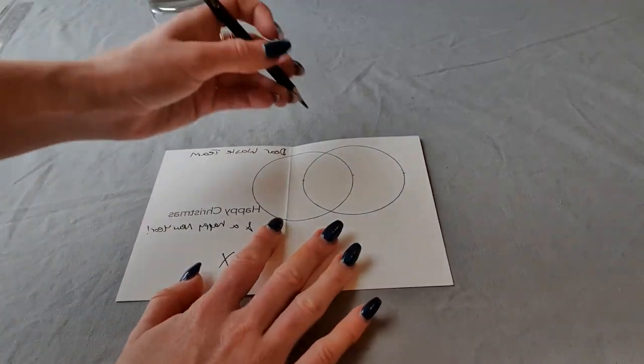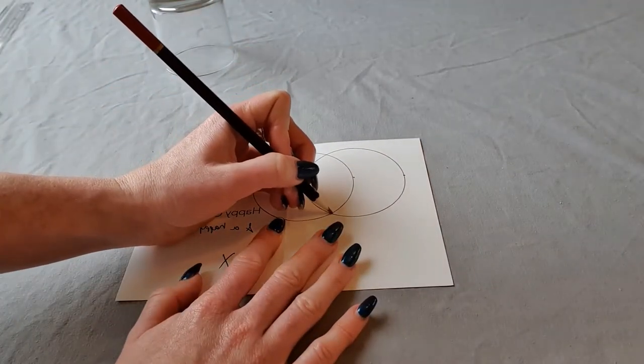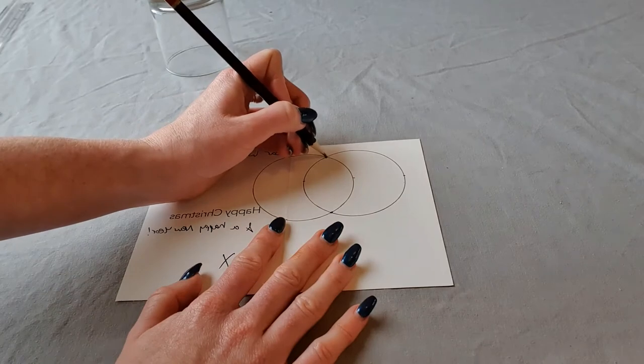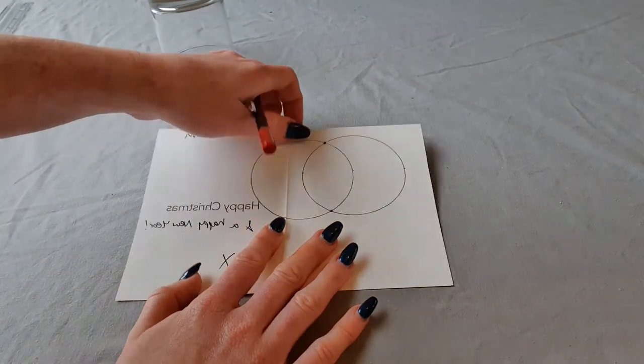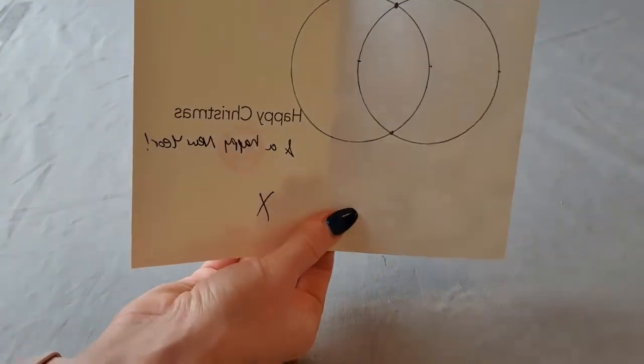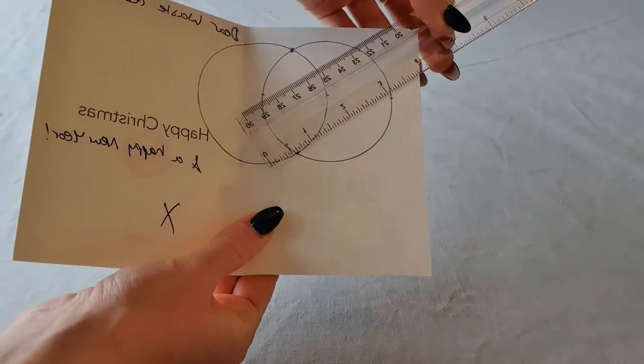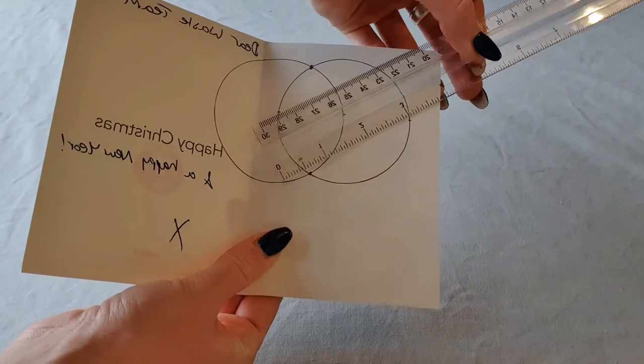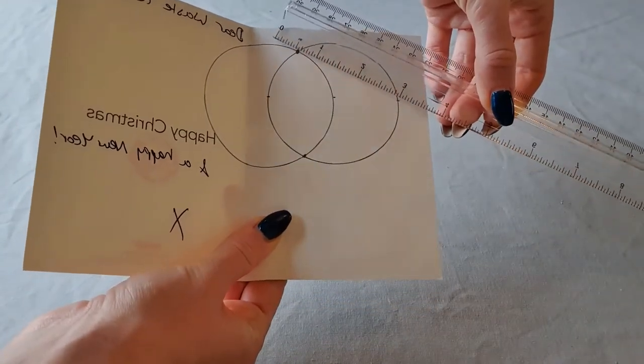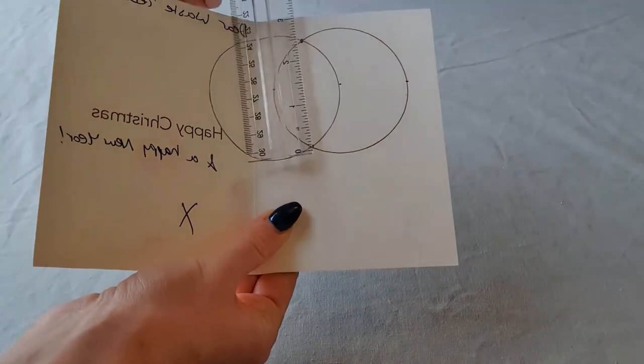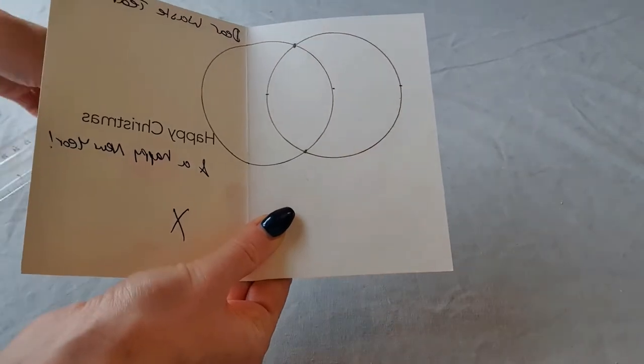Mark the points where the two circles intersect. Draw a straight line from each intersect point to the point marked on the circle edge, and draw another straight line joining the two intersect points.